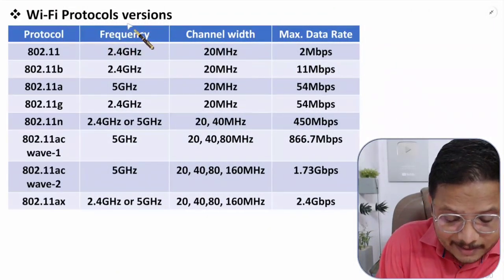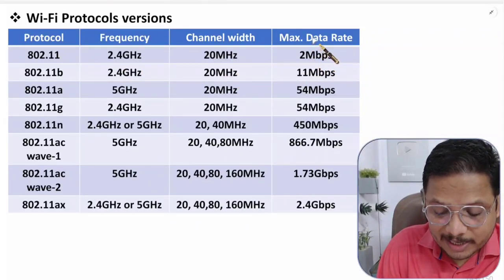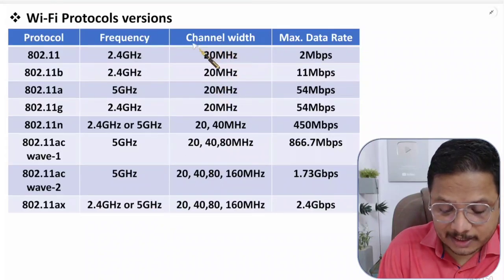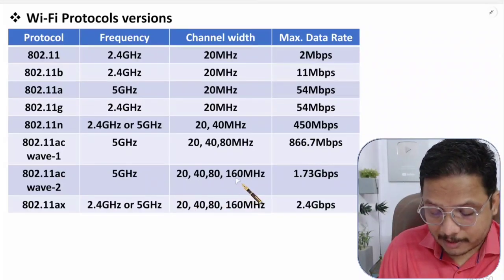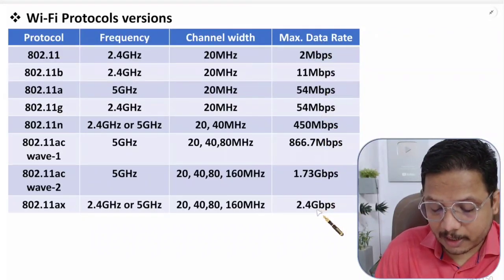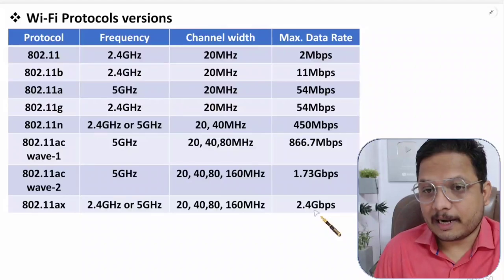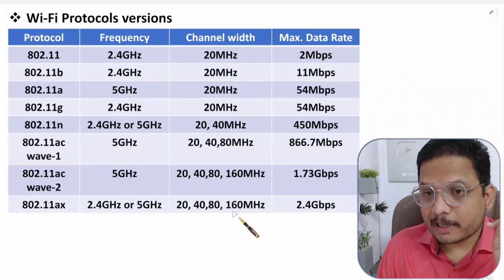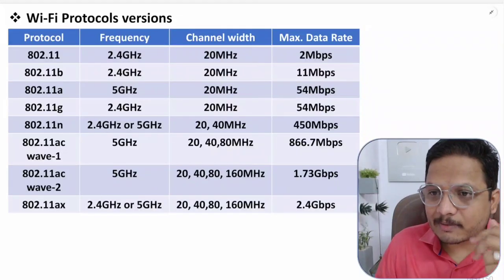Various versions of Wi-Fi have evolved over time. The earliest version used 2.4 GHz with a 20 MHz channel width and a maximum data rate of 2 Mbps. Newer versions added 5 GHz support, and channel width can now go up to 160 MHz. As a result, the maximum data rate has increased to up to 2.4 Gbps. This is because of multiple available channels and much wider channel bandwidth.